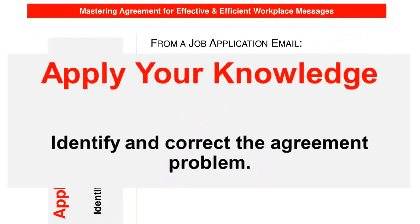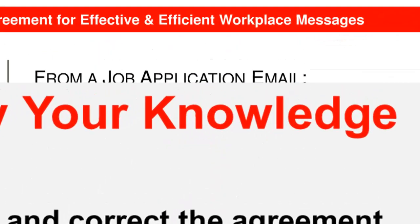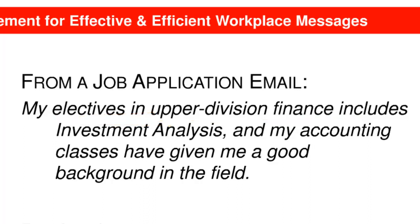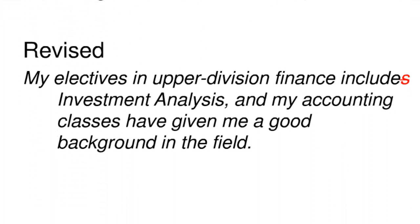Time to check your understanding of agreement by revising a sentence you haven't seen before. Pause the recording and look at this example from a different job application email. You look to the left of INCLUDES, the first verb form in the sentence. You see MY ELECTIVES and UPPER DIVISION FINANCE. If you use the tag ending test, you should have recognized that DON'T THEY is the choice that conveys the right meaning and uses a subject and verb that agree in number. That means the subject of the sentence is plural, and the verb needs to be revised to the plural form INCLUDE—that's what you see in the revised version here.